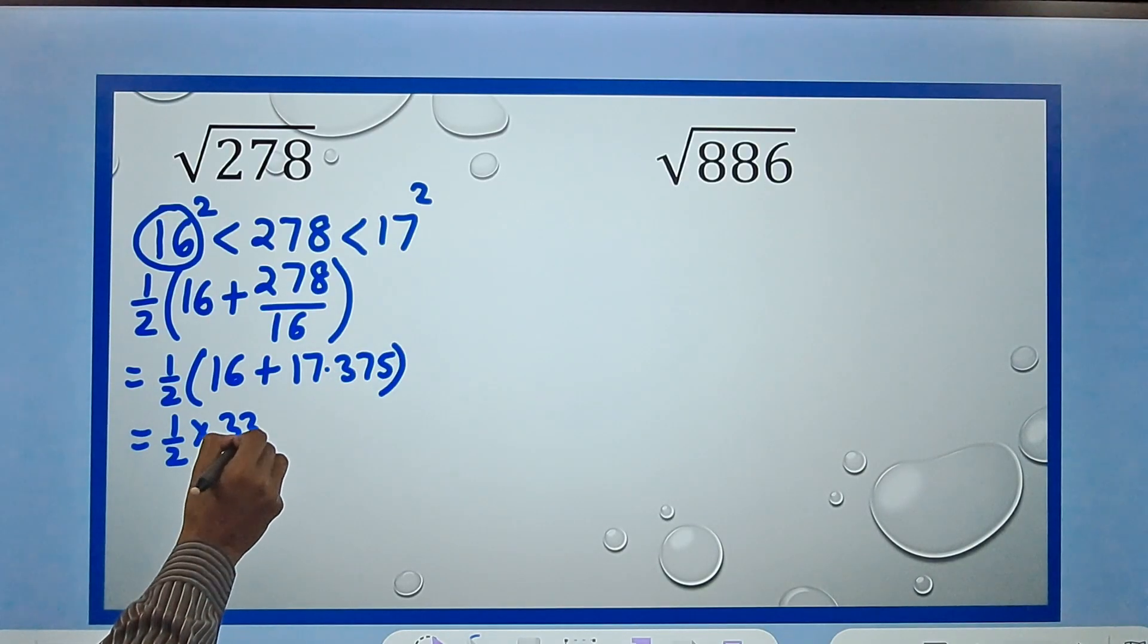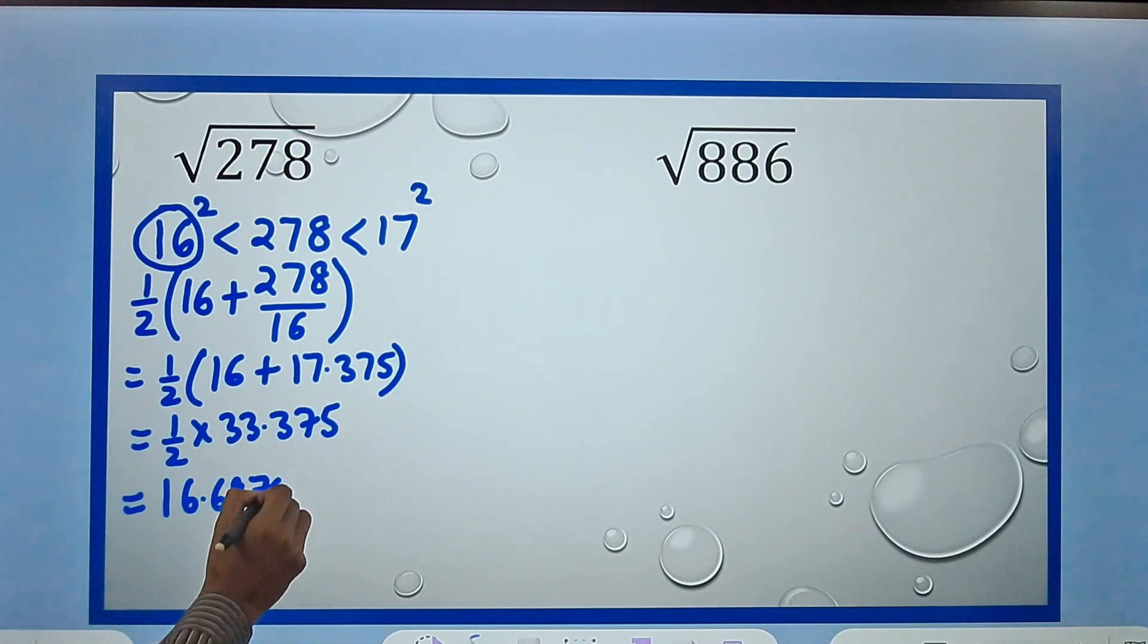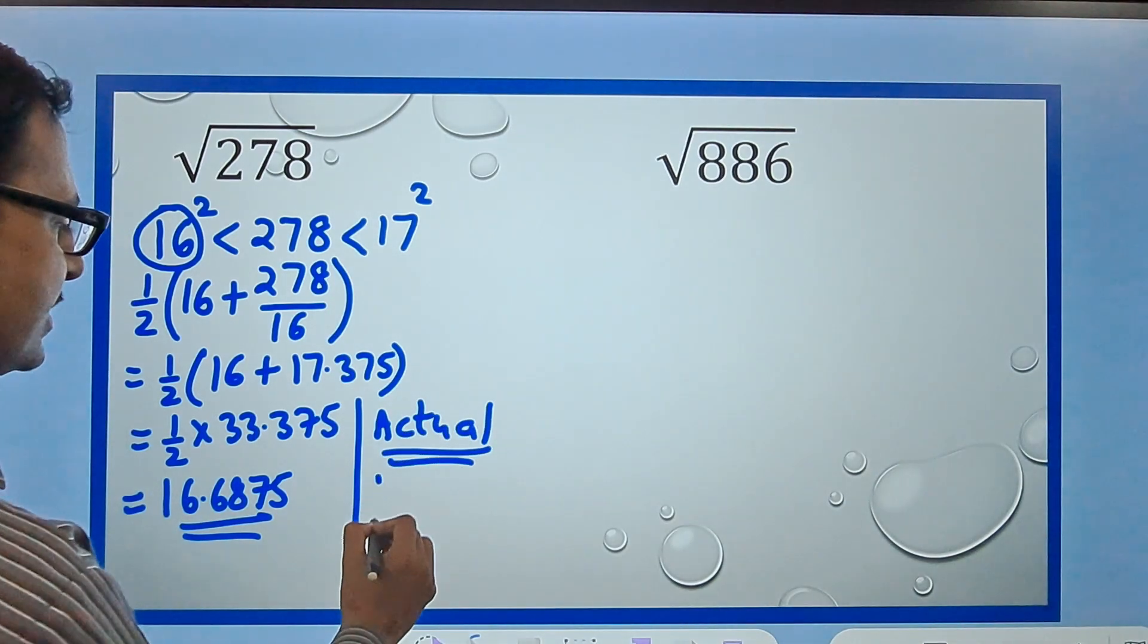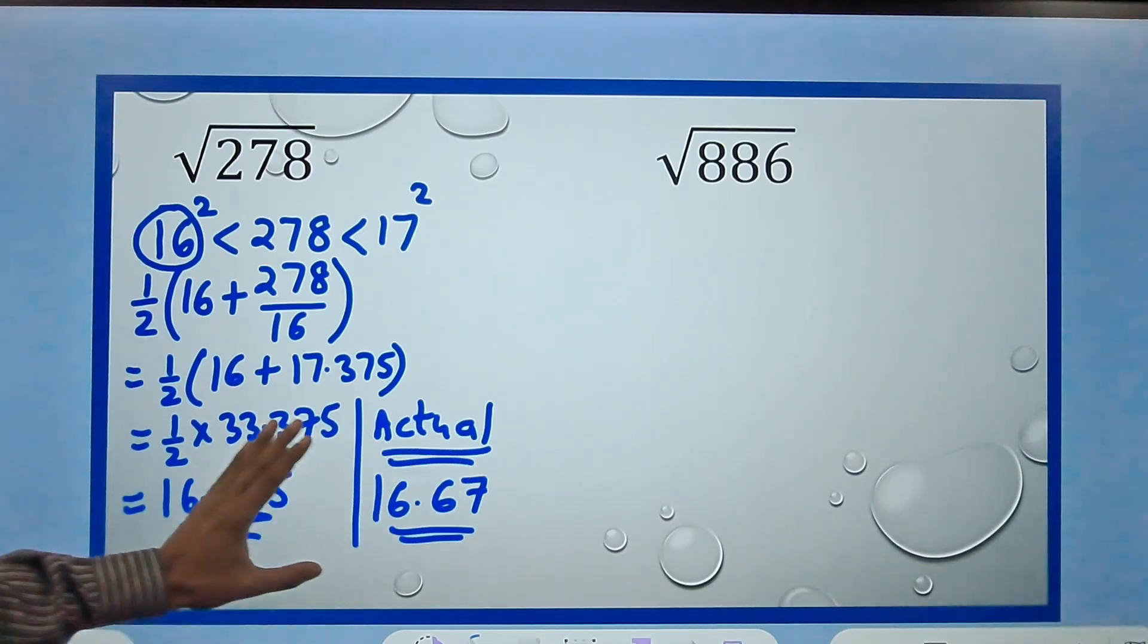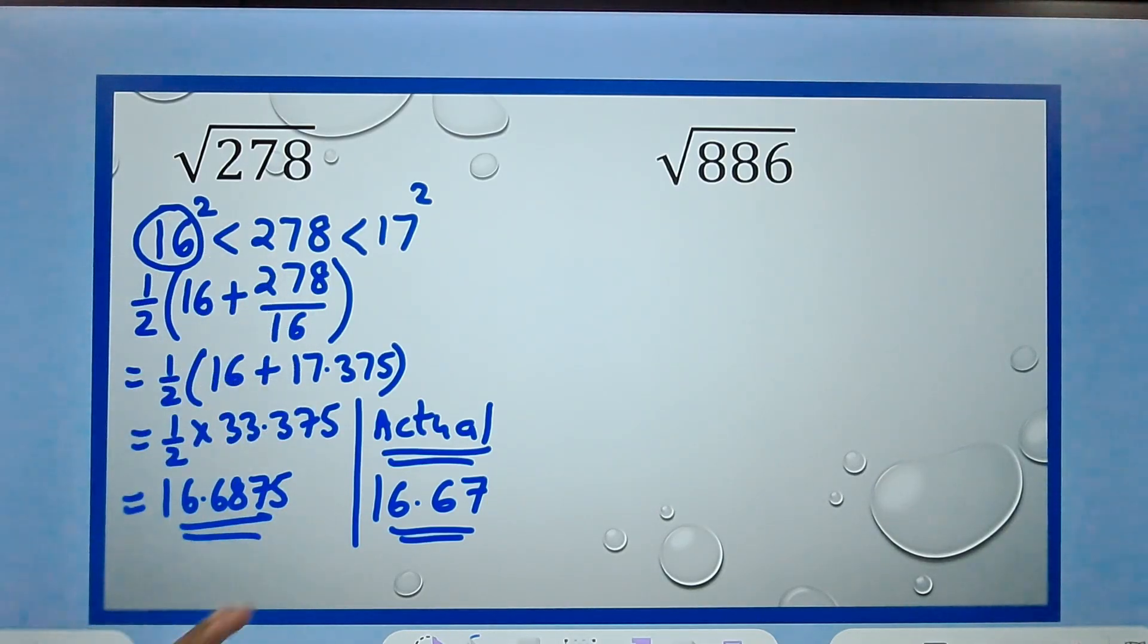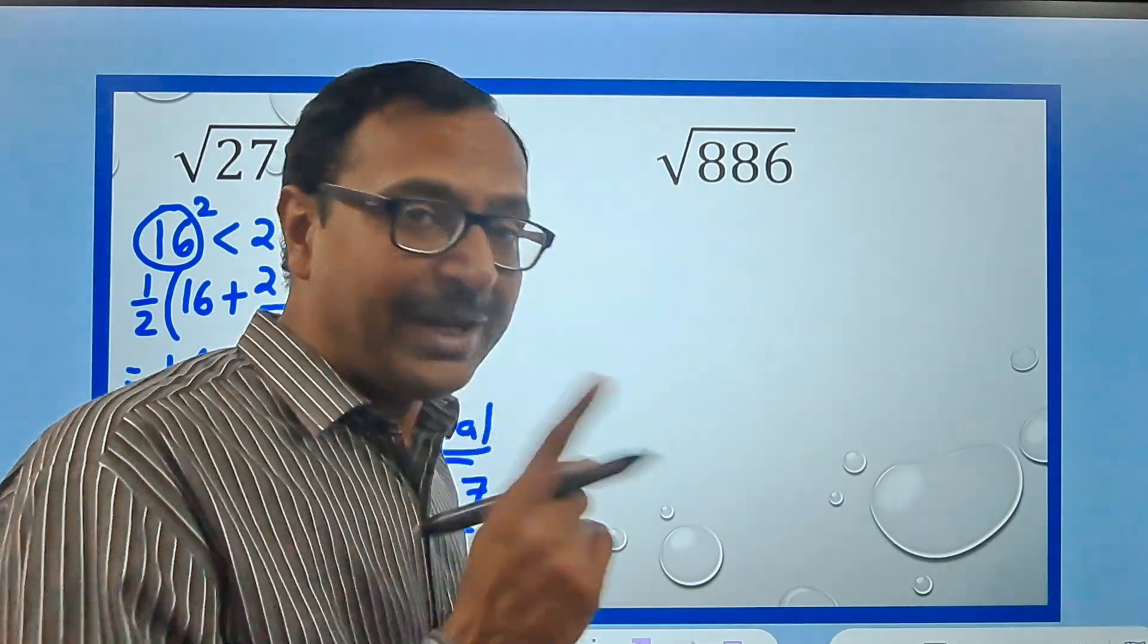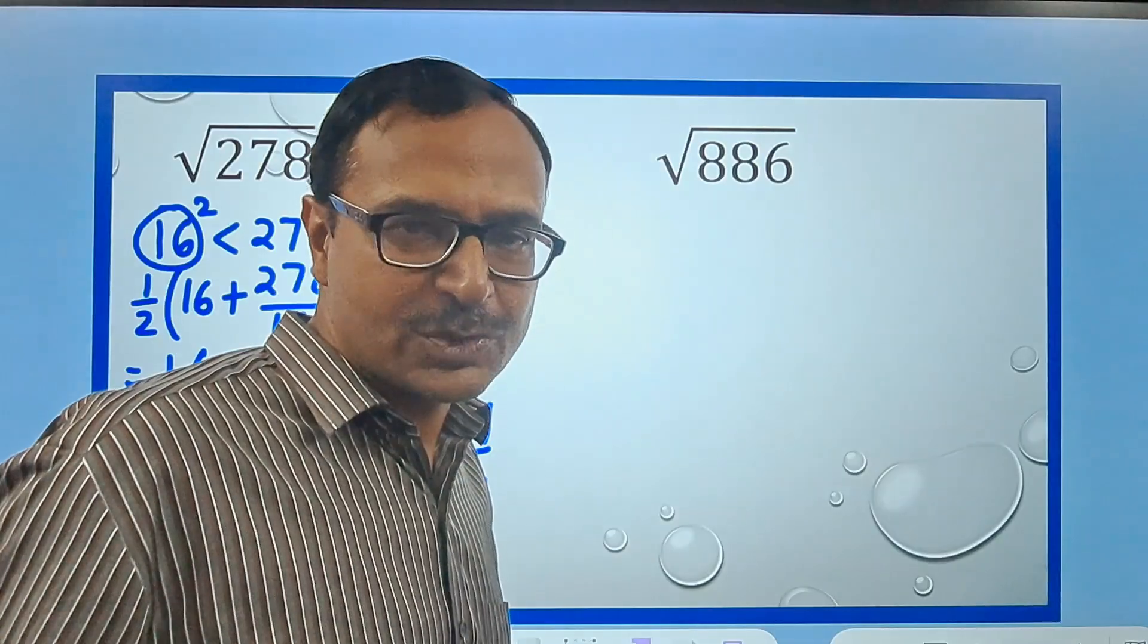Now if you pick up the calculators and check the actual value, the actual value of this square root is 16.67. Look at the variation - we have 0.01 variation in the actual answer and in this answer which we have obtained through this short trick: half of (a + b/a). As you practice through this method, you will find that the time you are consuming for solving these type of questions is getting lesser and lesser. Very helpful for finding the approximate square root when you are at school level. They only look for approximate square roots, and for multiple choice questions it's a boon for cracking them.